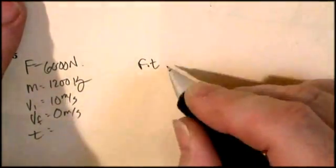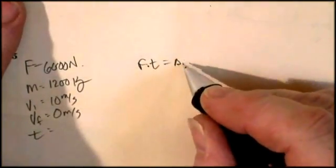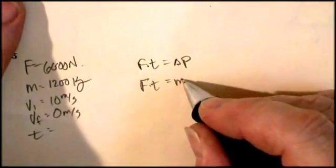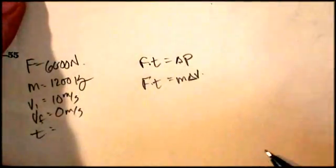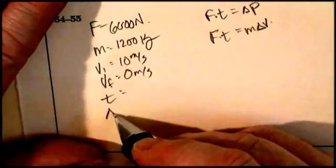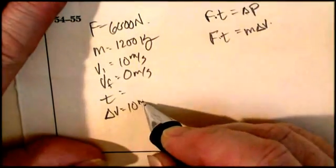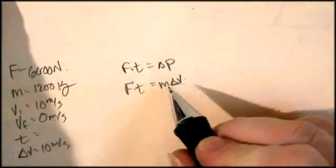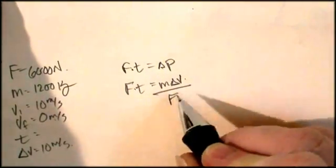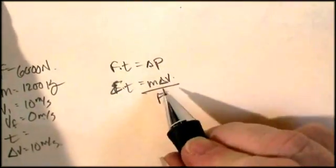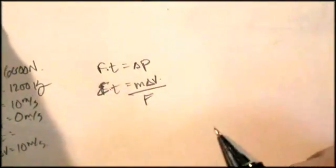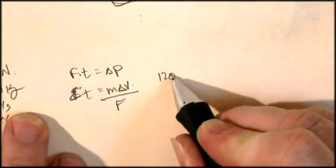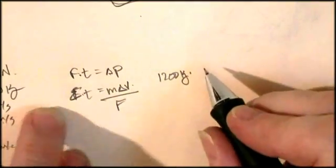So I can write this equation right here. I can write force times time impulse is equal to a change in momentum. I can write force times time impulse is equal to mass times change in velocity. And my change in velocity is going to be 10 meters per second as well because it's going from 10 to 0. So I can write this equation and I'm looking for time, so I can divide by force. Time is equal to m delta V over F.